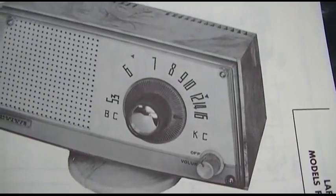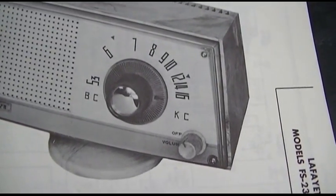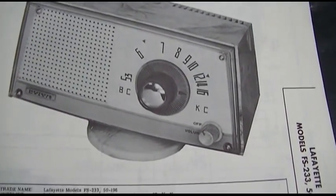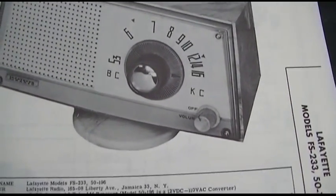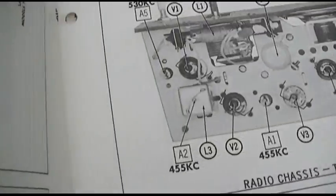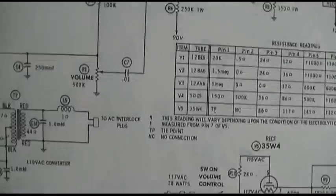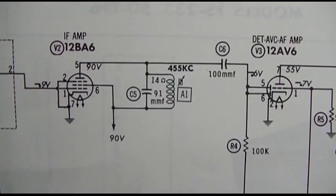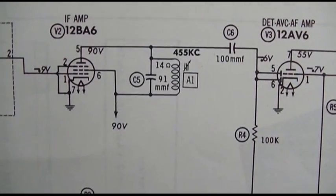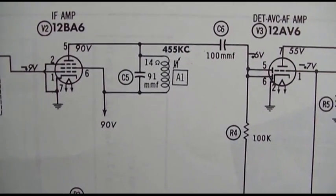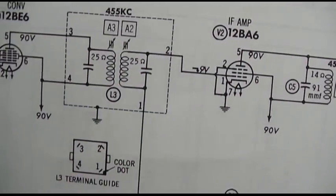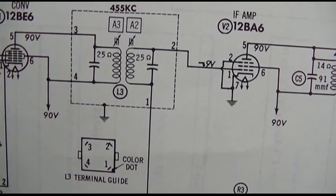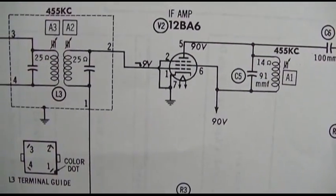I was looking through a bunch of different schematics at just All-American 5 radios, and I came across one that's a little different. Here, this is from 1962. This is a Lafayette. They don't use a transformer here, they just use a tuned circuit. They use one there but they don't use one here.